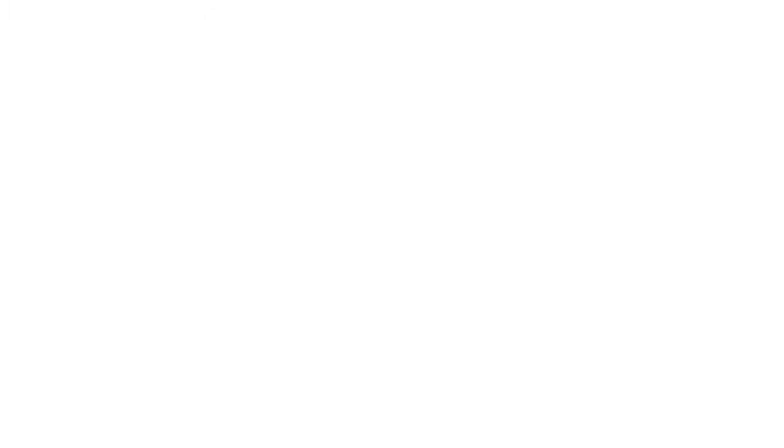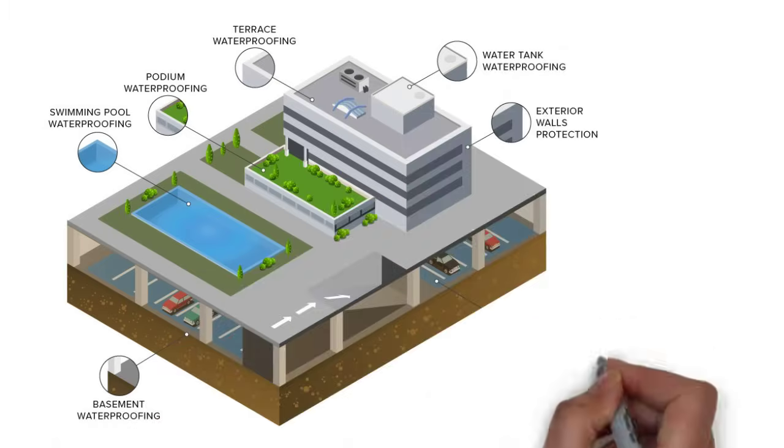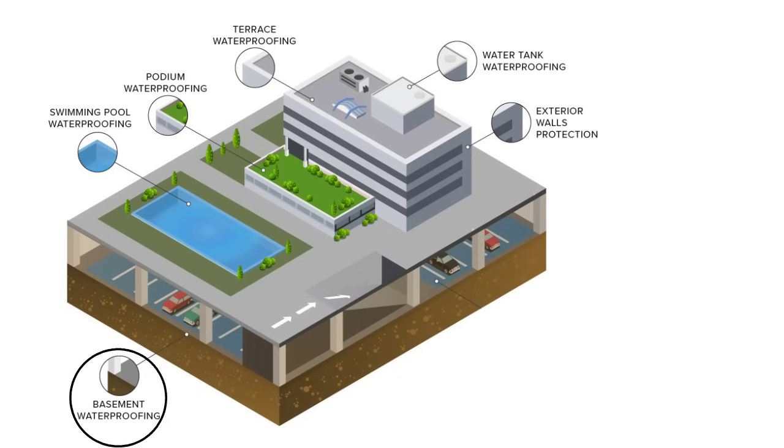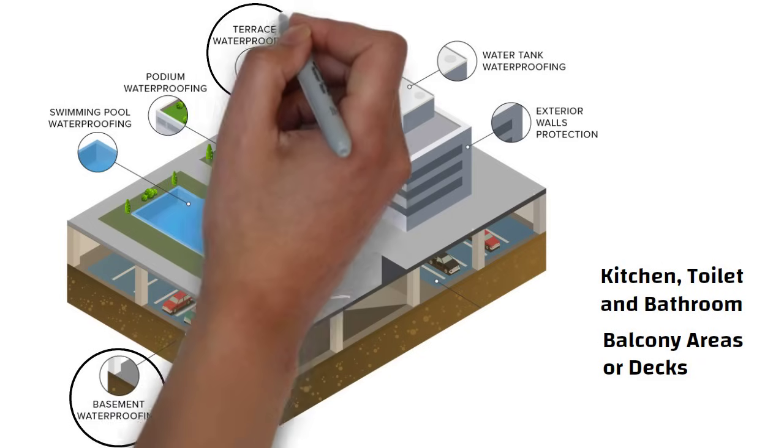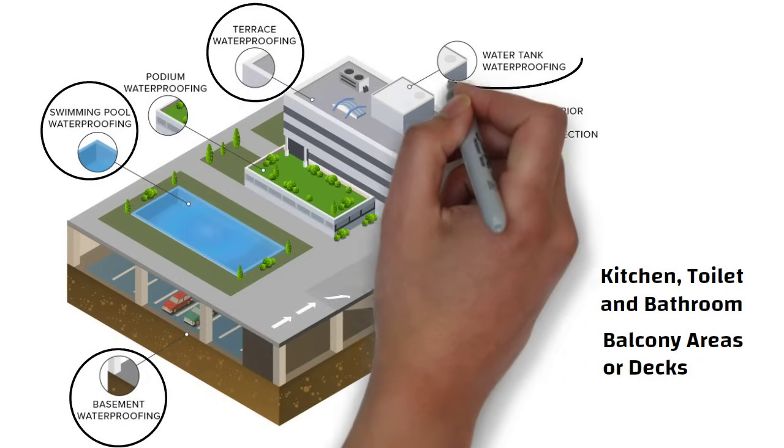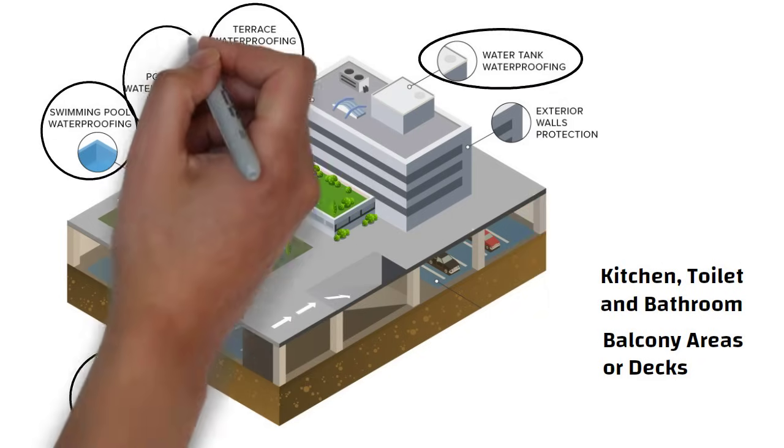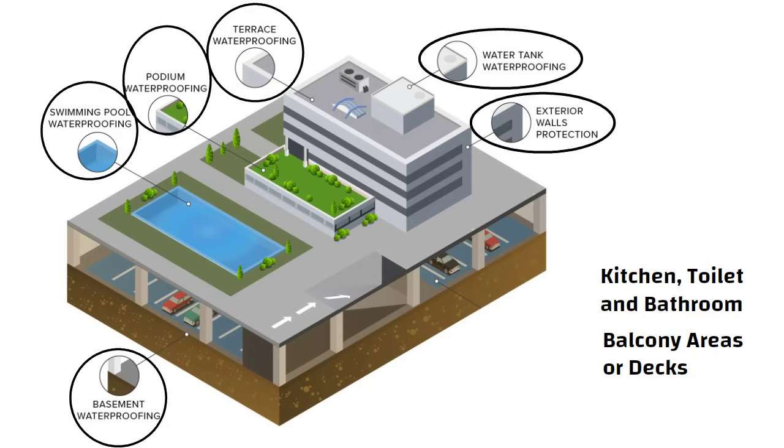Let us understand which areas in a building needs waterproofing. Basement of the building, kitchen, toilet and bathroom, balcony areas, decks, roof, terrace, swimming pool, water tank, podium areas, exterior walls, etc.